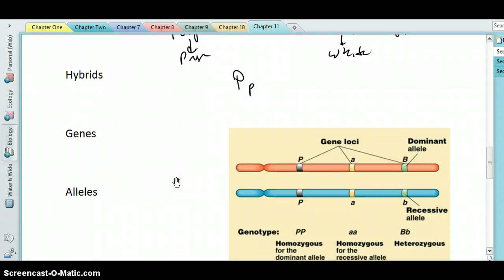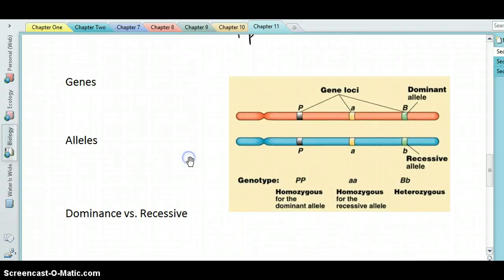All right. So like I said, essentially Mendel discovered genes, although he didn't coin this term. And he figured out that genes come in different forms. Now genes have particular locations on a chromosome. So here's a pair of chromosomes with the same genes on them. And you can see the P gene is in a particular location, and the A gene is in a particular location, and the B gene as well.